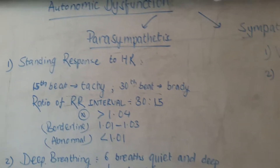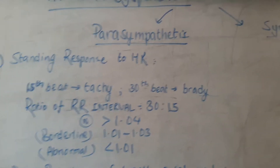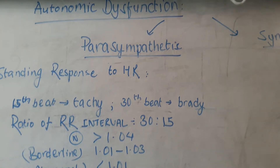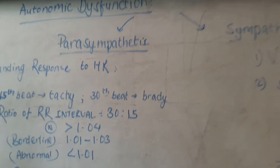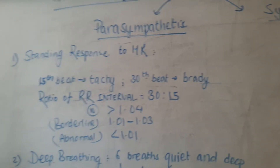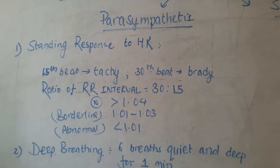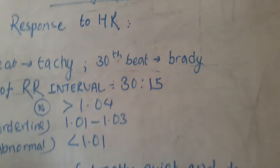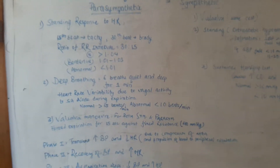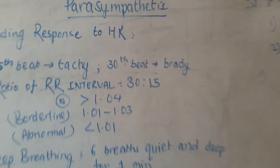Today I would like to discuss autonomic dysfunction and the various tests that are done to test for parasympathetic and sympathetic nervous system activity, and the various tests that show that a patient is having autonomic dysfunction. Here in the chart it has been simplified on the board, so I will be talking one by one.